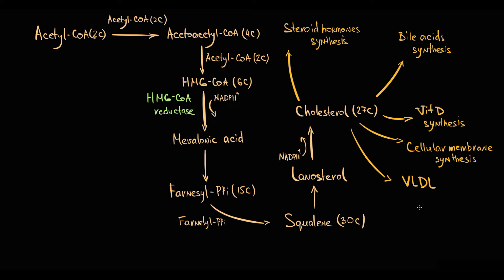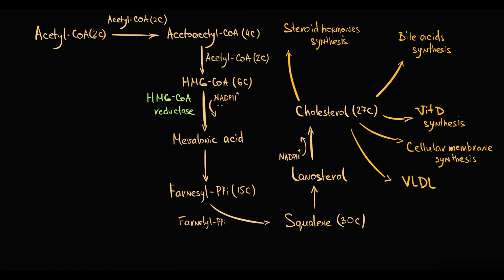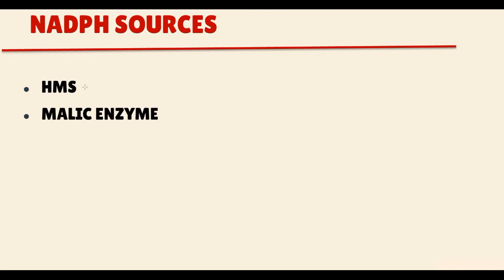Cholesterol synthesis requires a lot of NADPH molecules. We have two sources of NADPH molecules. Most of the NADPH molecules come primarily from the hexose monophosphate shunt, which is the major source. A small amount of NADPH molecules are produced by malic enzyme, which is a minor source.